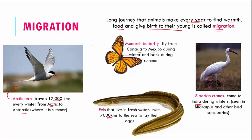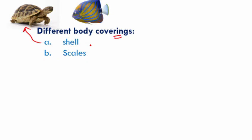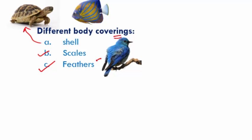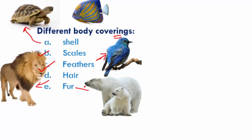Let's do a quick recap of what we covered. First, we looked at different body coverings: shell (turtle), scales (fish), feathers (birds), hair (mammals), and fur — we took the polar bear as an example of fur. This covered the different body coverings.